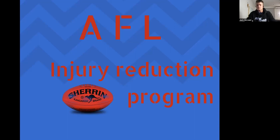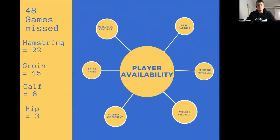Last season, we had 48 games missed due to non-contact injuries, 22 of which were from hamstring injuries, 15 from groin injuries, 8 from calf and 3 from hip. Therefore, the research that I compiled together was strongly influenced on hamstrings and groin injuries.